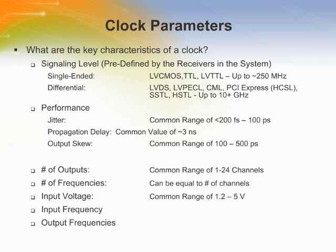It is important to note that a specific system will require a unique combination of the parameters listed here. The first characteristic to determine the appropriate clocking solution will be the signaling level that the system requires. A signaling level is either single-ended or differential. The common types of single-ended signals are LV-CMOS, TTL, and LV-TTL, and they support up to roughly 250 MHz. The common types of differential signals are LVDS, LV-PECL, CML, PCI Express, SSTL, and HSTL, and they can support up to 10-plus GHz. The signaling level will be defined by the type of system and application needing the clock.